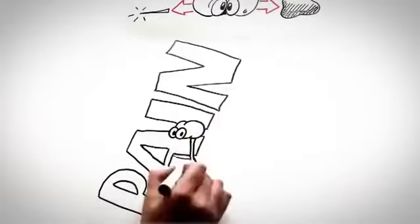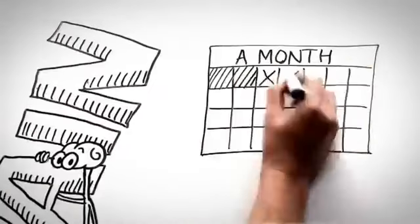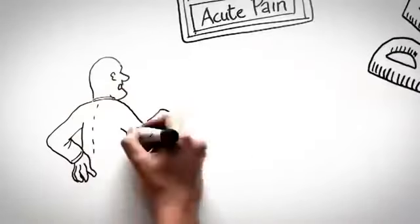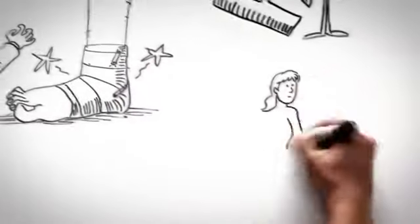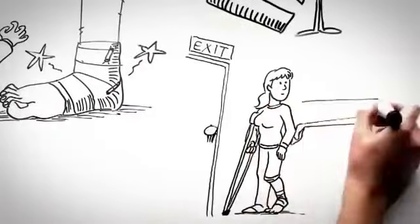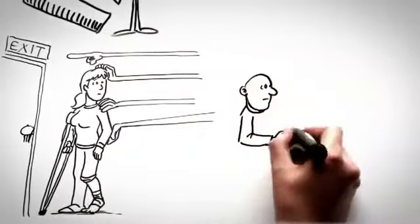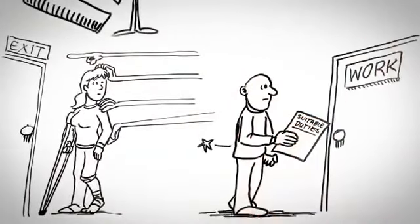You might have had it for a few weeks or months. This is called acute pain, and it's common with tissue damage, say from a back injury or ankle sprain. Generally you'll be encouraged to stay active and gradually get back to doing all your normal things, including work.